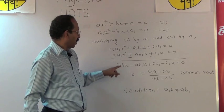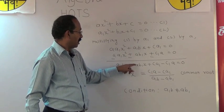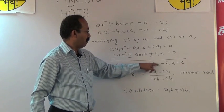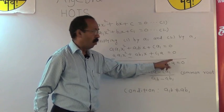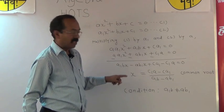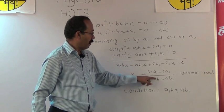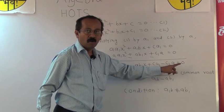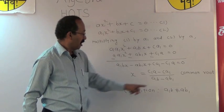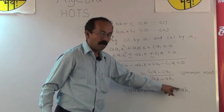After subtracting, a₁bx minus ab₁x plus c₁a minus ca₁ equals 0. After simplifying this, we get x equals c₁a minus ca₁ upon a₁b minus ab₁, which is the common root. So the condition is a₁b is not equal to ab₁.